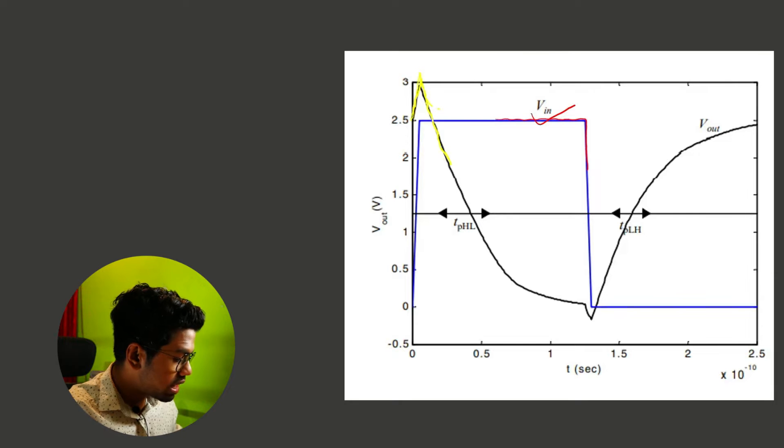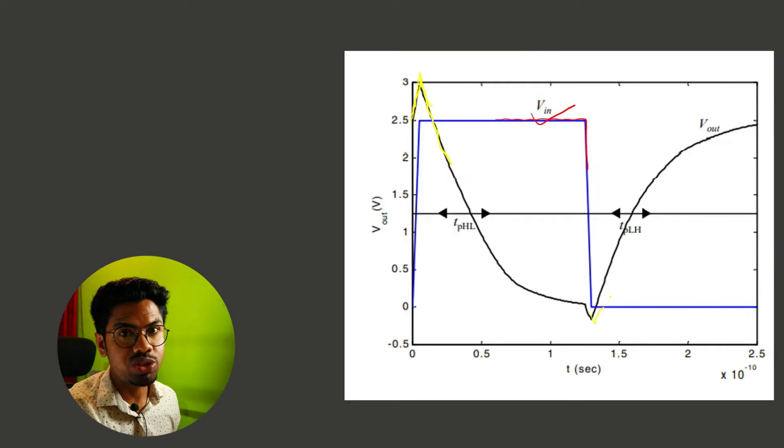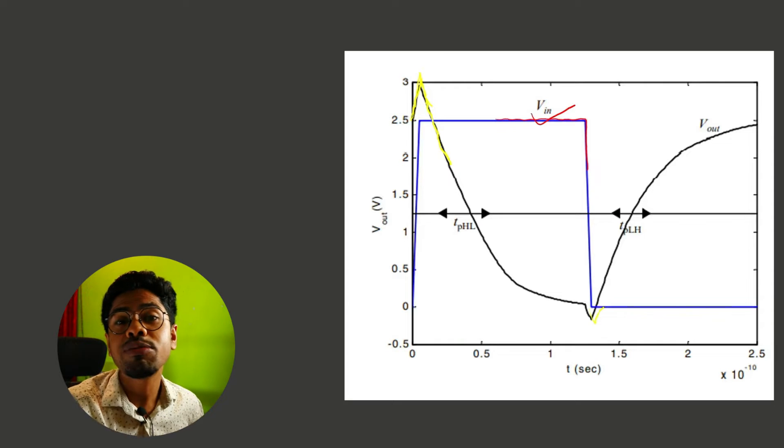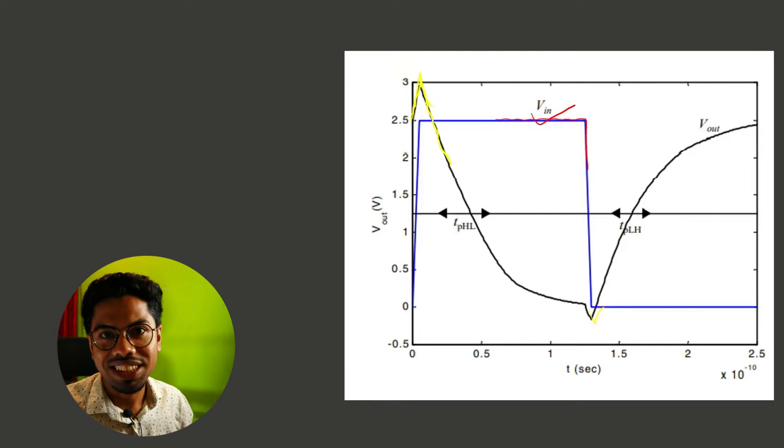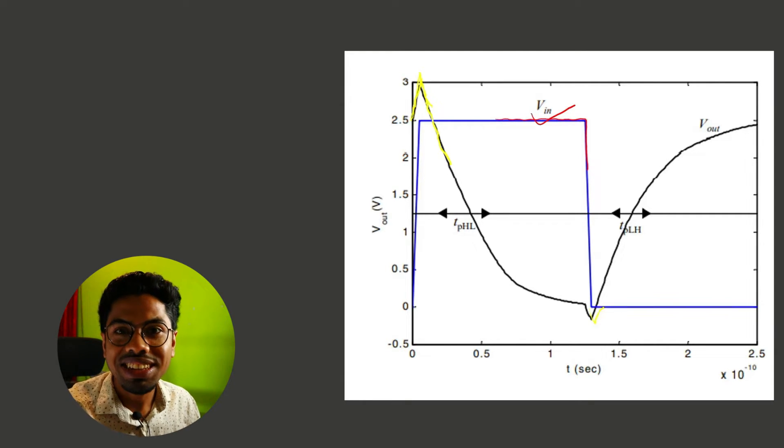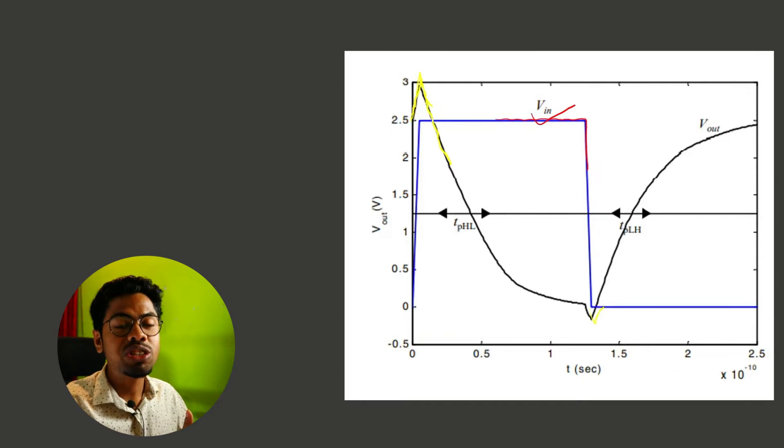There will be some overshoot and some undershoot. The question is why this is happening. When I first designed a layout for a CMOS inverter and got a result like this, I thought I had made some mistakes, but actually this overshoot and undershoot will occur.